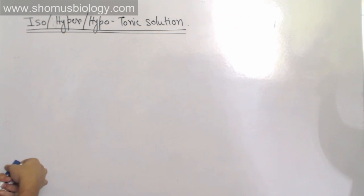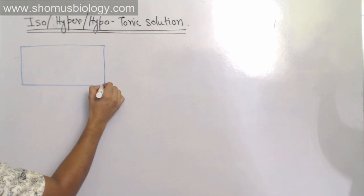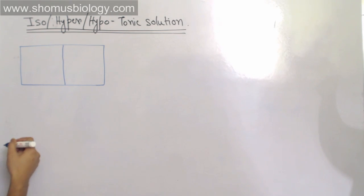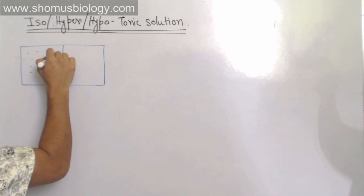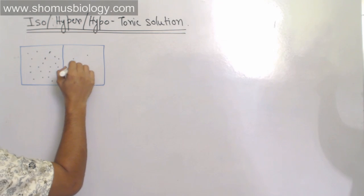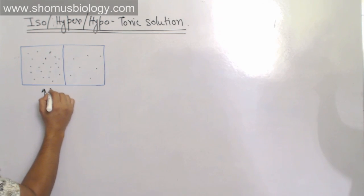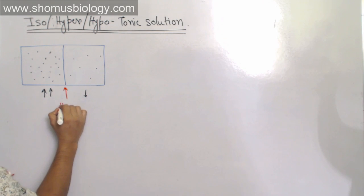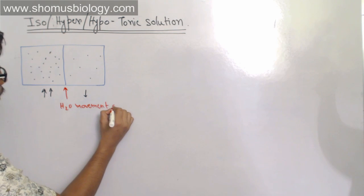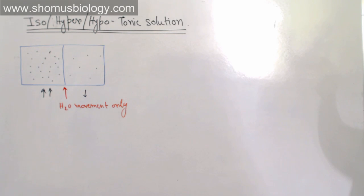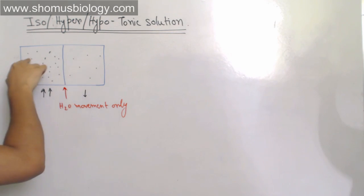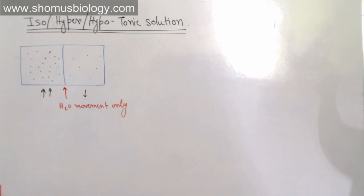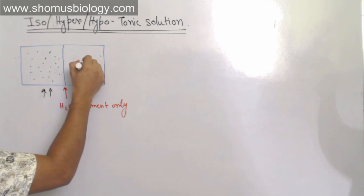Now let me briefly tell you about tonicity. In osmosis, we have a chamber separated by a semi-permeable membrane. The black dots represent sugar molecules — the concentration on the left-hand side is higher than on the right. The membrane is semi-permeable, meaning it only allows water movement. Solutes cannot move through it, so water can only move. Water molecules start to move from the left-hand side.